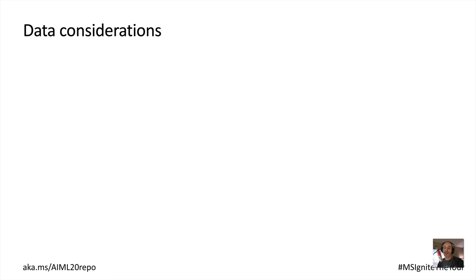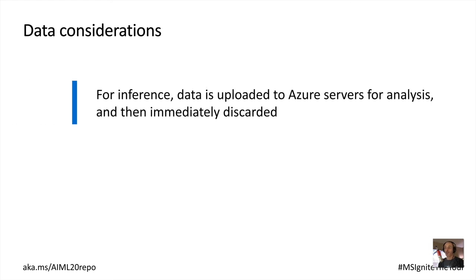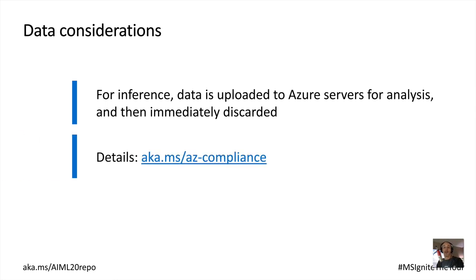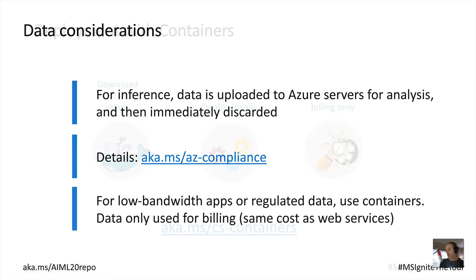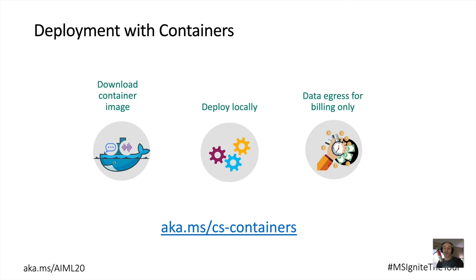You should also consider where your data is going and how it will be used. Your images or text will be uploaded to Azure for inference but are never stored by cognitive services — that link provides all the details about privacy and regulation. If you work in a regulated industry like medicine where data cannot leave your firewall, some cognitive services are available as independent containers. You can download the container image, deploy it behind your firewall, and use your local endpoints just like you would if running in Azure — the data never leaves your network.